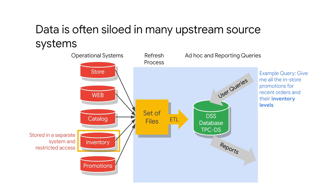Now suppose you need to do an analytics query such as: give me all the in-store promotions for recent orders, and also tell me how many items we have in the inventory. Given such a query, you need to know how to combine data from the stores, data from the promotions, and data from the inventory levels. And because these are all stored in separate systems, and usually some of these systems will have restricted access, building an analytic system that uses all three of these data sets to answer an ad-hoc query like this can be quite difficult.